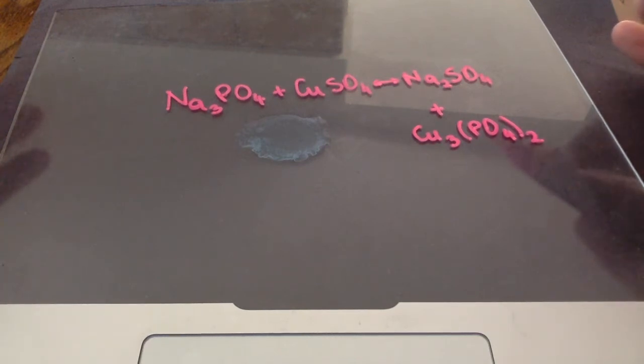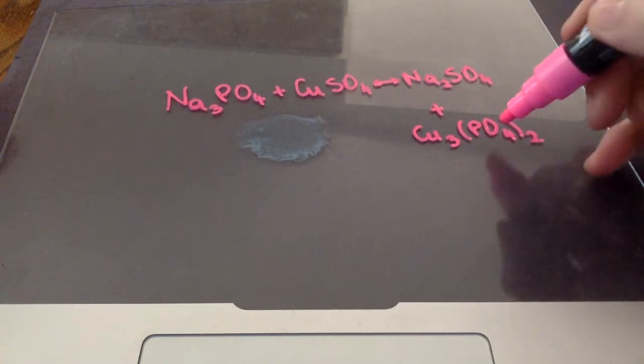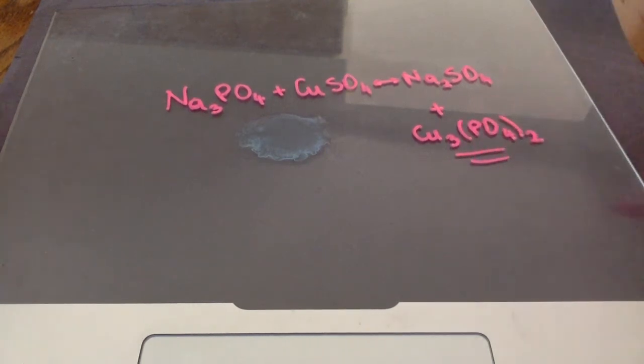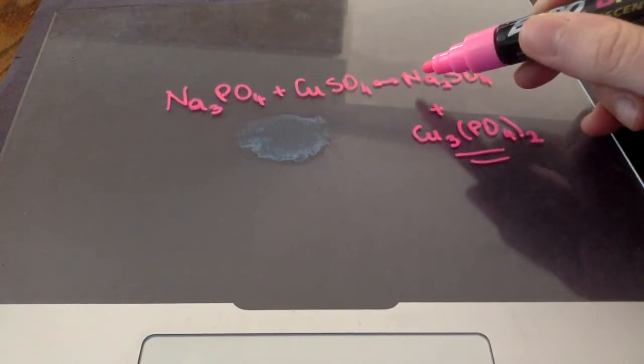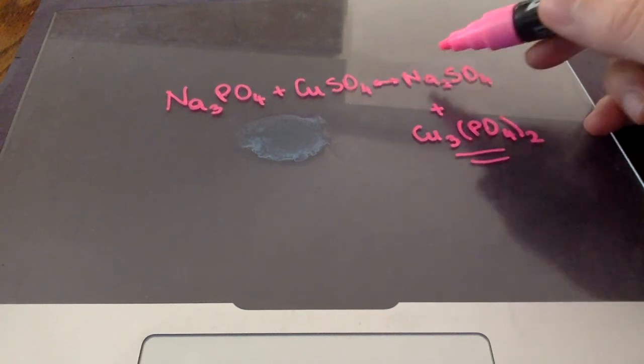The net ionic equation is that equation that shows us only the ions that form the precipitate. This is the precipitate that forms, because sodium sulfate is soluble in water. Anything that contains sodium is soluble. So, this isn't our precipitate.